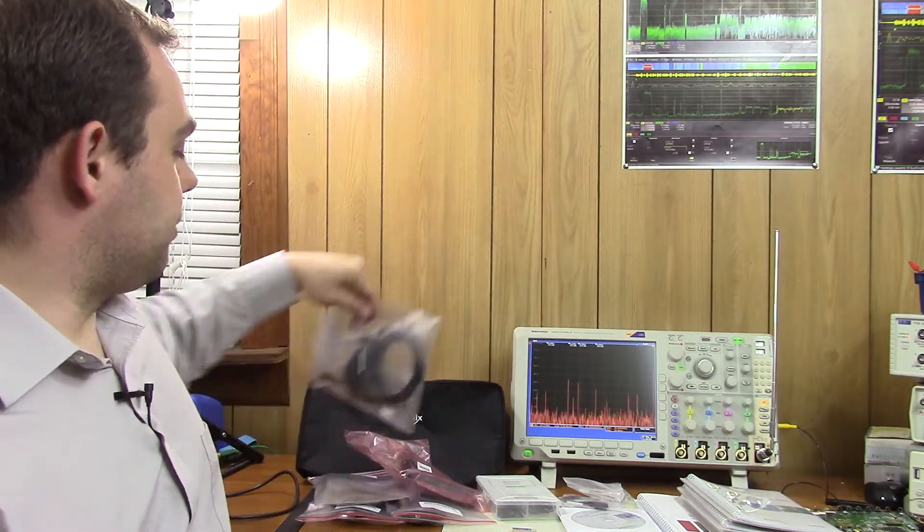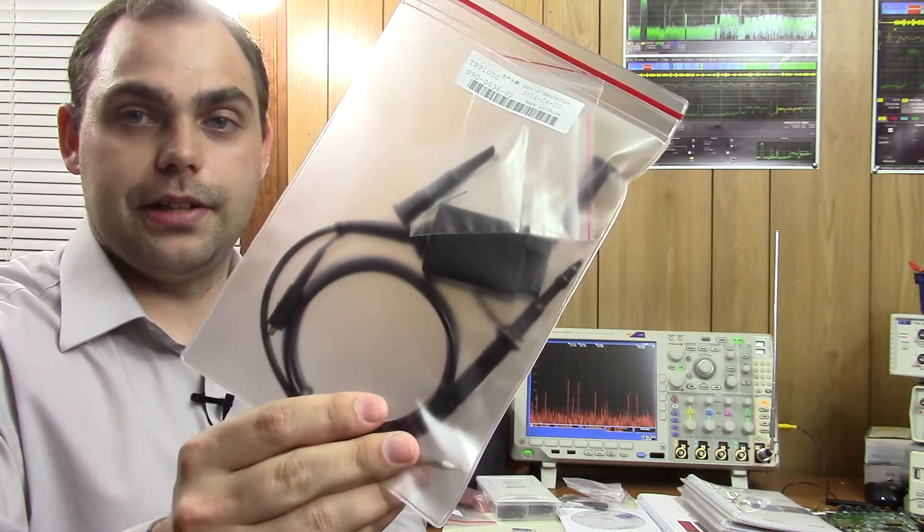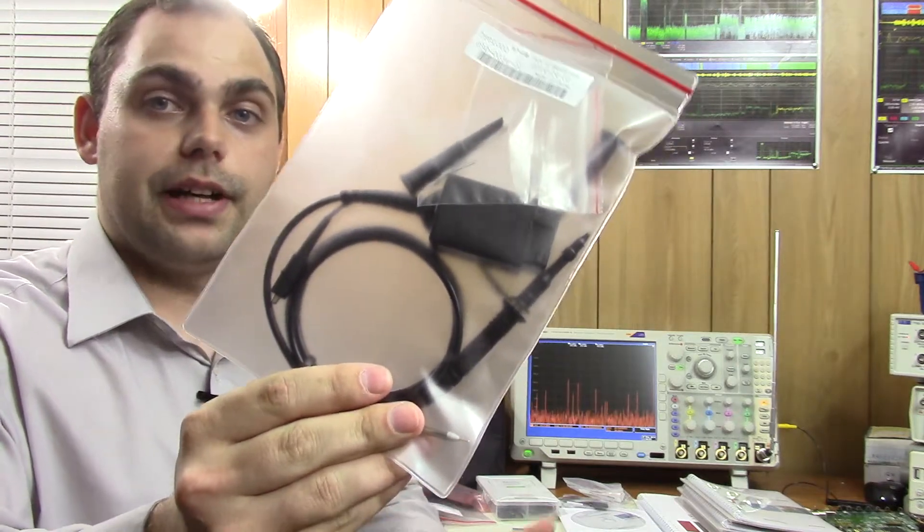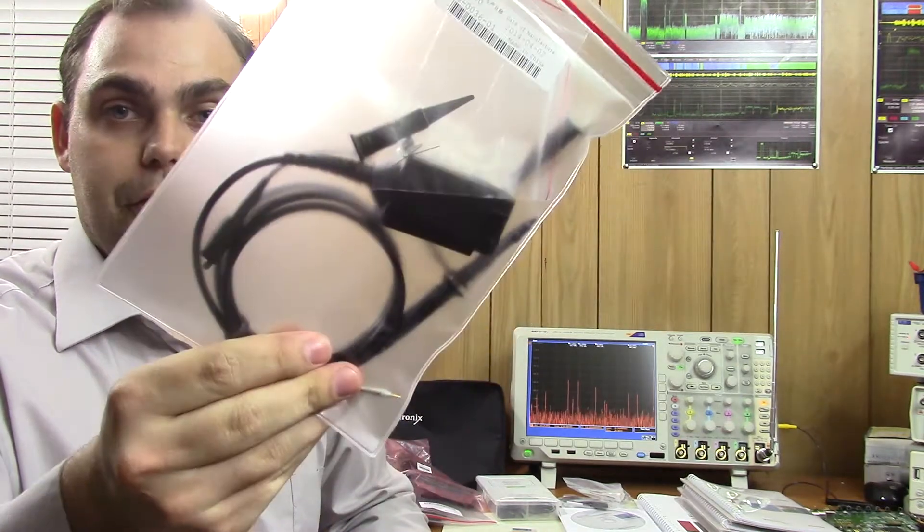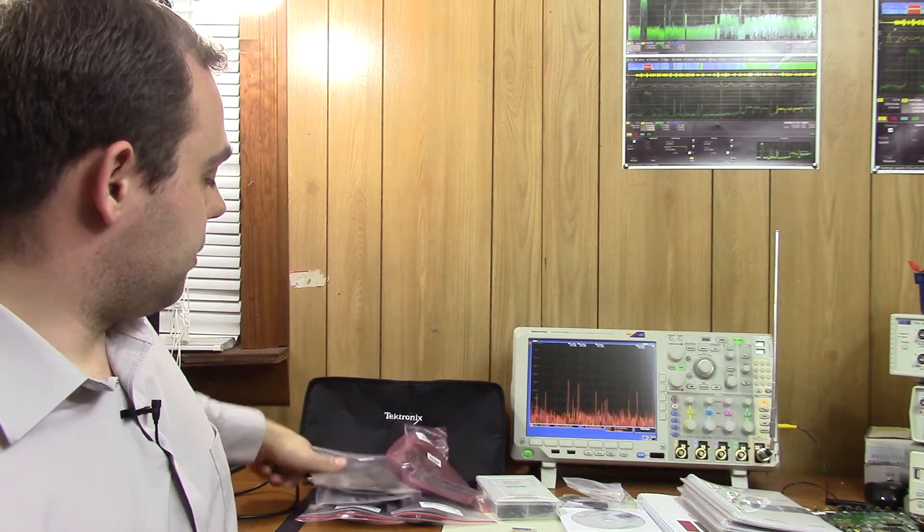But some things like those 1 gigahertz passive probes are going to be included with every oscilloscope with 1 gigahertz bandwidth. There's four of them on a four-channel oscilloscope, and this oscilloscope also has a 16-channel logic analyzer.